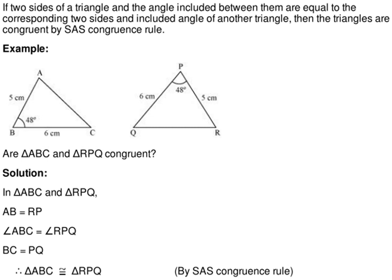We are taking an example. Here, ABC and RPQ are two triangles where AB is equal to RP, 5 cm, BC is equal to PQ, 6 cm, and angle B is equal to angle P, 48 degrees. It means two sides and one angle are equal.